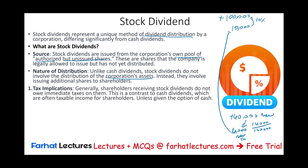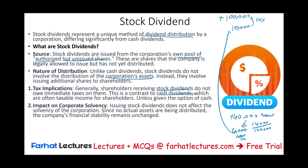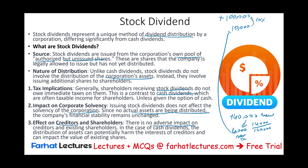Stock dividends generally have no immediate tax consequences for shareholders, because no cash is distributed. Issuing stock dividends also does not affect corporate solvency — no actual assets are distributed, so the balance sheet total stays the same. All that happens is retained earnings decrease while common stock and paid-in capital increase. Creditors are not harmed because no cash is paid out, and existing shareholder ownership percentages remain unchanged.